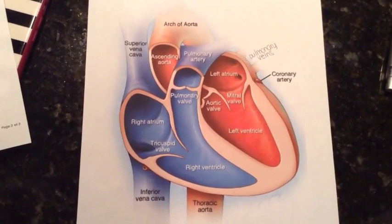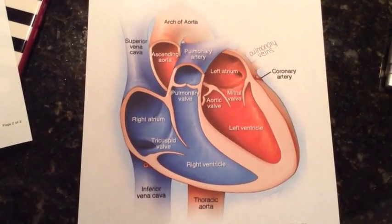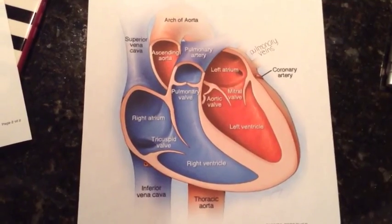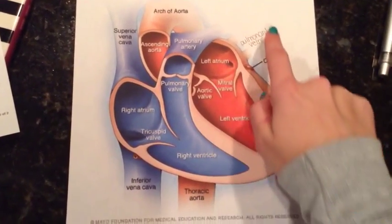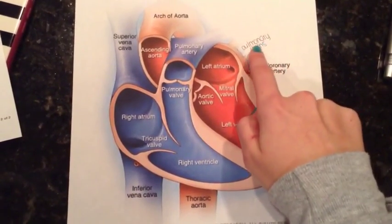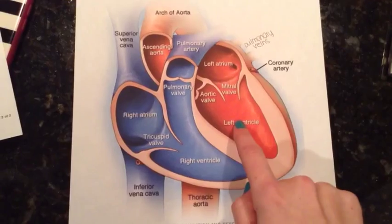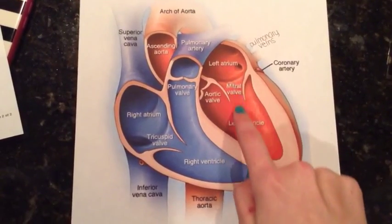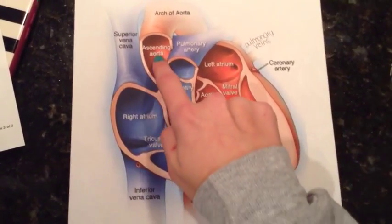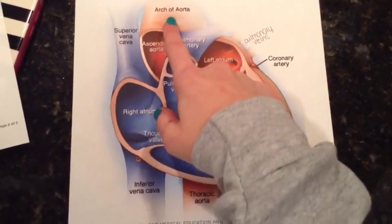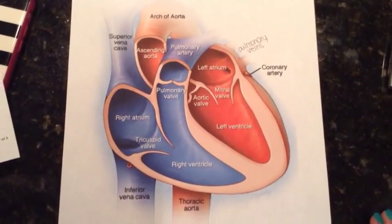Here, oxygen-poor blood picks up oxygen and is returned to the heart via the pulmonary veins. The left ventricle receives blood from the left atrium and pumps it to the aorta. The aorta carries and distributes oxygen-rich blood to the rest of the body.